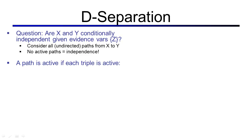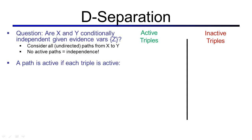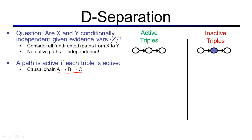A path is active if each triple along that path is active. Let's take a look at what kinds of triples we can have, categorized into active triples and inactive triples. The first kind of triple is one where we have a causal chain: A points to B points to C. If B, the middle node, is unobserved, we have an active triple. If B is observed, we have an inactive triple.